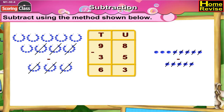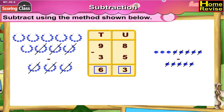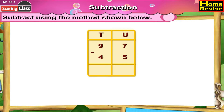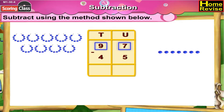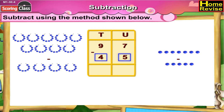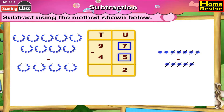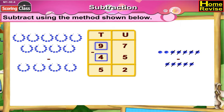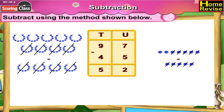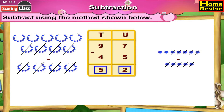3 units, which means 98 minus 35 is 63. Next, 97 minus 45. That is 9 tens 7 units minus 4 tens 5 units. Now 7 minus 5 is 2, 9 minus 4 is 5. So it is 5 tens 2 units. 97 minus 45 is 52.